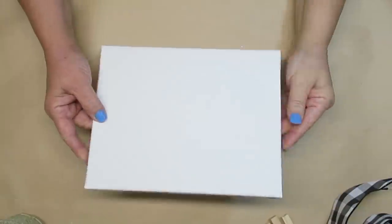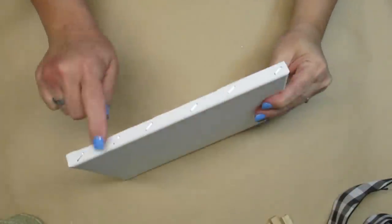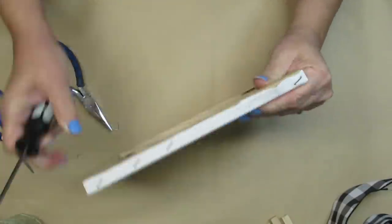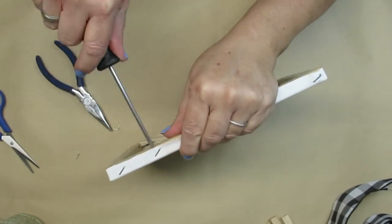This next project is using an 8 by 10 Dollar Tree canvas frame. I'm going to use my screwdriver and my needle nose pliers to pull out all of the staples and remove the canvas.